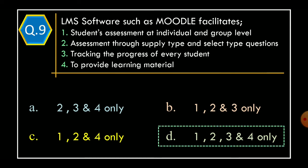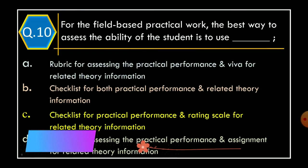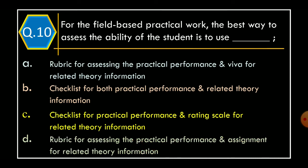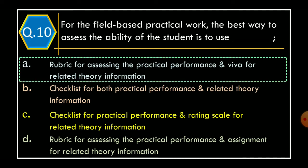The correct option for Question 9 is Option D: Statements 1, 2, 3, and 4 only. Question 10: For the field-based practical work, the best way to assess the ability of the student is to use — Option A: rubric for assessing the practical performance and viva for related theory information; Option B: checklist for both practical performance and related theory information; Option C: checklist for practical performance and rating scale for related theory information; Option D: rubric for assessing the practical performance and assignment for related theory information. The correct option is Option A.